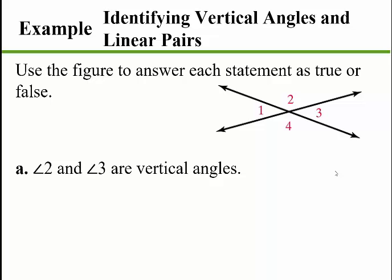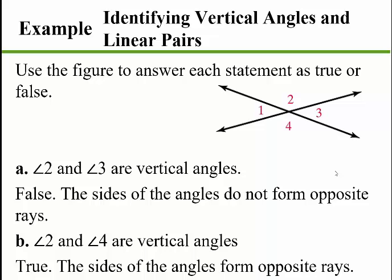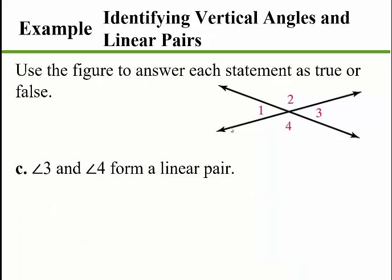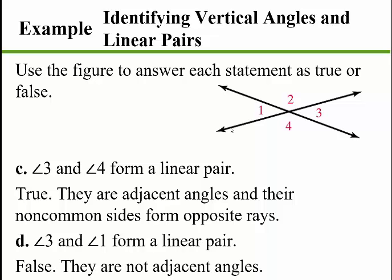Let's do an example identifying angles and linear pairs — use the figure to answer each statement as true or false. First: angles 2 and 3 are vertical angles — this is false, because the sides of those angles do not form opposite rays. Next: angles 2 and 4 are vertical — yes, true, the sides of the angles form opposite rays. Angles 3 and 4 form a linear pair — true, they are adjacent and their non-common sides form opposite rays. Angles 3 and 1 form a linear pair — false, they do not have adjacent sides at all, only a common vertex.